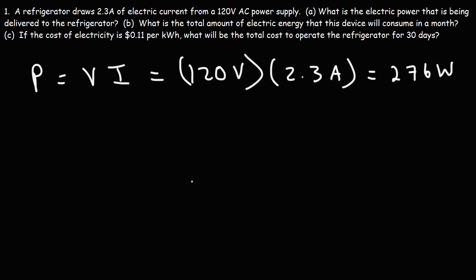One watt is one joule per second, so 276 watts is the electric power being delivered to the refrigerator. What this means is that every second, 276 joules of electric energy is being delivered to the refrigerator. That's electric power — it's the rate at which energy is being delivered to something.